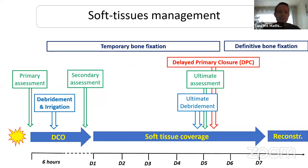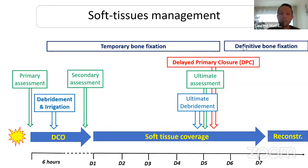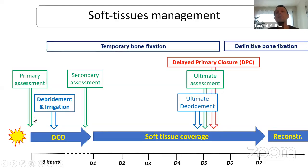We will now detail how to do it during the DCO procedure and during the first week. These are the different steps of management. We will start from primary assessment, then talk about debridement, secondary assessment of the wound once primary assessment is done, and daily primary closure. We will have to perform an ultimate assessment after an ultimate debridement. The day you close the wound, it will be a different wound than the first day because of tissue evolution and the frequent requirement of serial debridement.